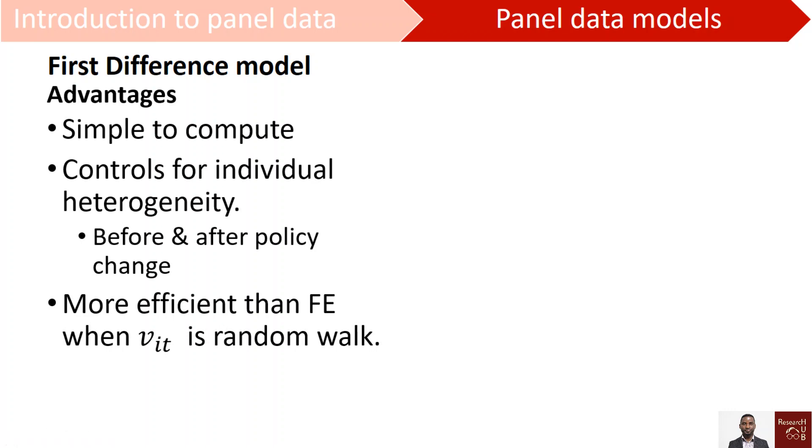The first difference model uses more information because it only takes the differences between two years, whereas fixed effects will take the averages for all the years. So sum up all the values for all years of a particular variable by the total number of years.